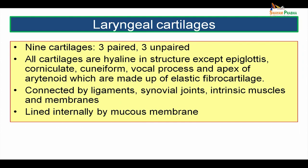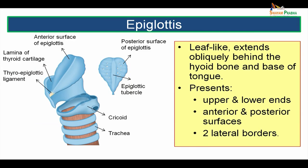All the hyaline type of cartilages can ossify as age advances, but ossification does not occur in the elastic fibrocartilages. These cartilages are connected by ligaments, synovial joints, intrinsic muscles and membranes, and they are all lined internally by mucous membrane. Let us now see each of these cartilages in detail.